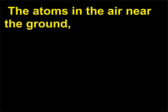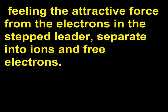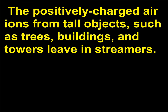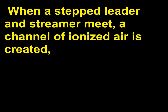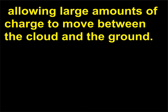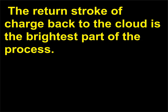The atoms in the air near the ground, feeling the attractive force from the electrons in the step leader, separate into ions and free electrons. The positively charged air ions from tall objects, such as trees, buildings, and towers leave in streamers. When a step leader and streamer meet, a channel of ionized air is created, allowing large amounts of charge to move between the cloud and the ground. The return stroke of charge back to the cloud is the brightest part of the process.